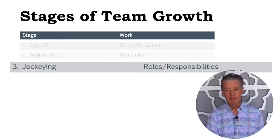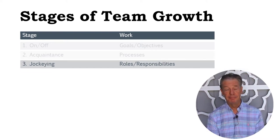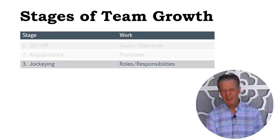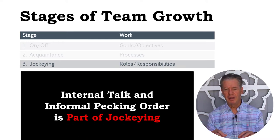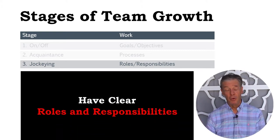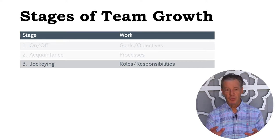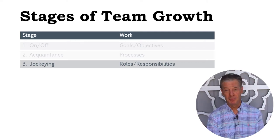Step number three is jockeying. Now that everyone's been acquainted, folks start figuring out: there are five of us at this level, there's only one at that level, which means I have to beat out four of these people. Some I can probably outpace, but this one over here looks like a comer, so I need to up my game. All of that internal talk and informal pecking order that gets established is all part of jockeying. The way you work through that is by having clear roles and responsibilities — we're all going to play baseball, so you play this position, you play second, and now we all know each other's role and responsibility.